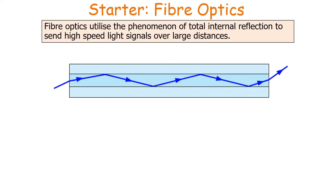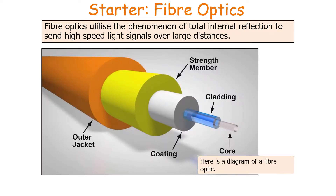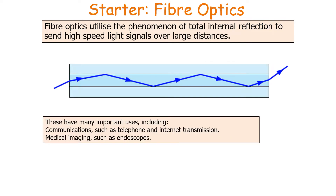Fibre optics utilise the phenomenon of total internal reflection to send high speed light signals over large distances. Fibre optics have many important uses in the real world, such as communication in telephone and internet transmission, and in medical imaging such as in endoscopes.